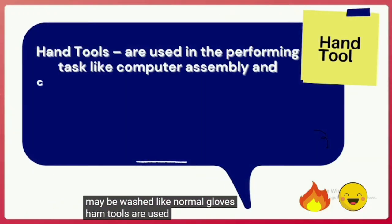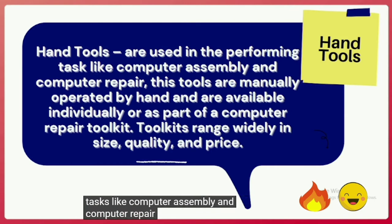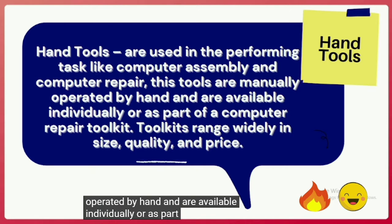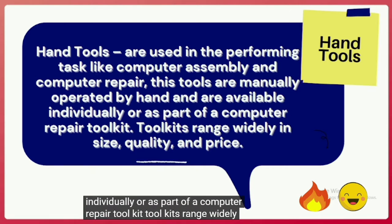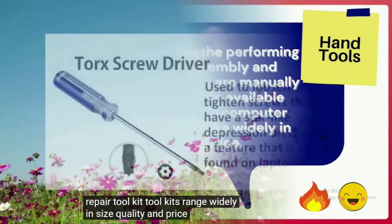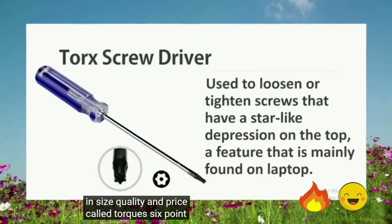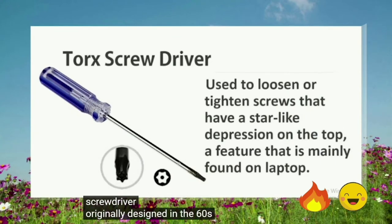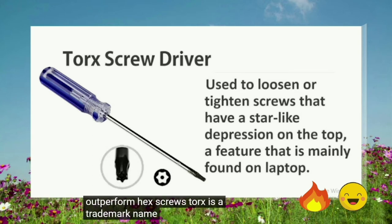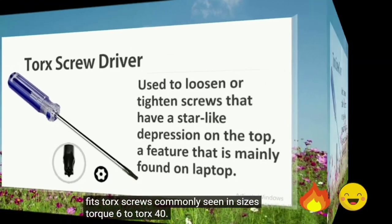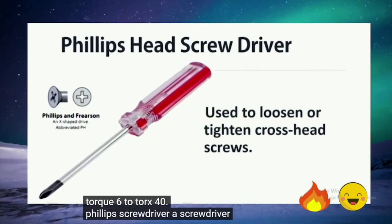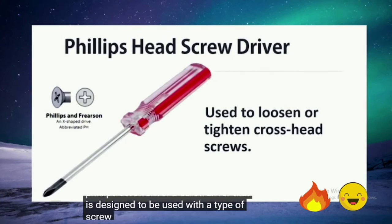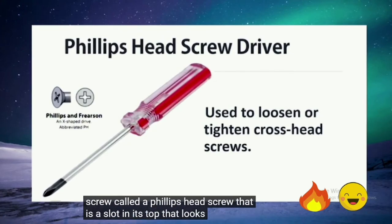Hand tools are used for tasks like computer assembly and repair. They are manually operated and available individually or as part of a computer repair toolkit. Toolkits range widely in size, quality, and price. A Torx screwdriver, also called a 6-point or star screwdriver, is a six-pointed star-shaped screwdriver originally designed in the 60s, available in sizes Torx 6 to Torx 40. A Phillips screwdriver is designed for Phillips head screws that have a cross-shaped slot on top.